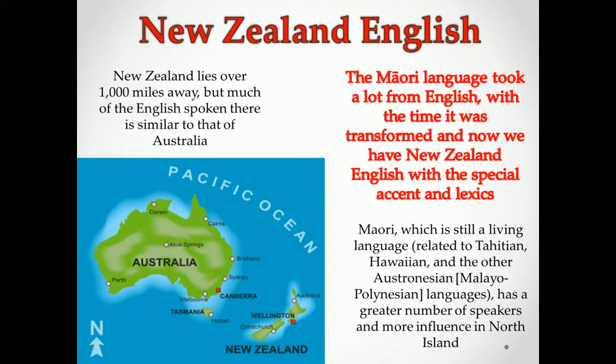The Maori language took a lot from English, and with time it was transformed, giving us New Zealand English with a special accent and lexis. Maori, which is still a living language related to Tahitian, Hawaiian, and other Austronesian Malayo-Polynesian languages, has a greater number of speakers and more influence in the North Island.